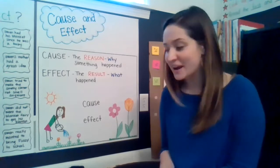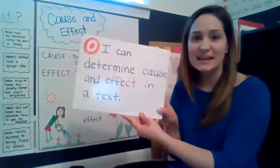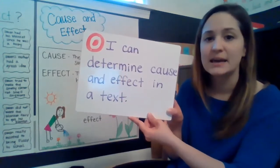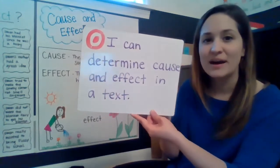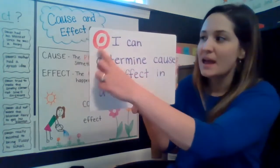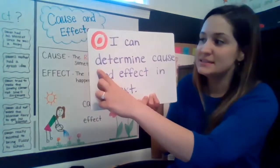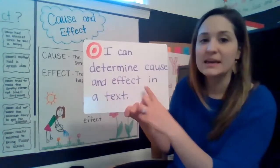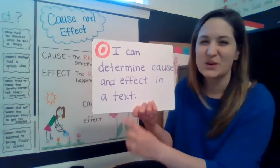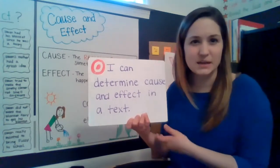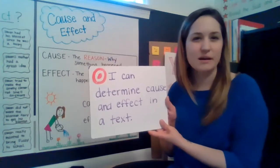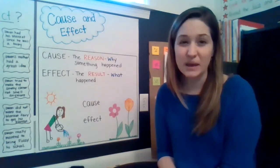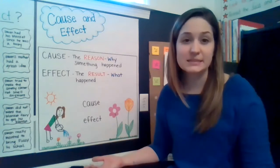Today we have a new target and our target is: I can determine cause and effect in a text. Why don't you try to read that with me? Ready? I can determine cause and effect in a text. Great. Now these are some big words in here so I want to break down this target a little bit for us. Today we're talking about cause and effect and those are big words that have to do with events in our story.